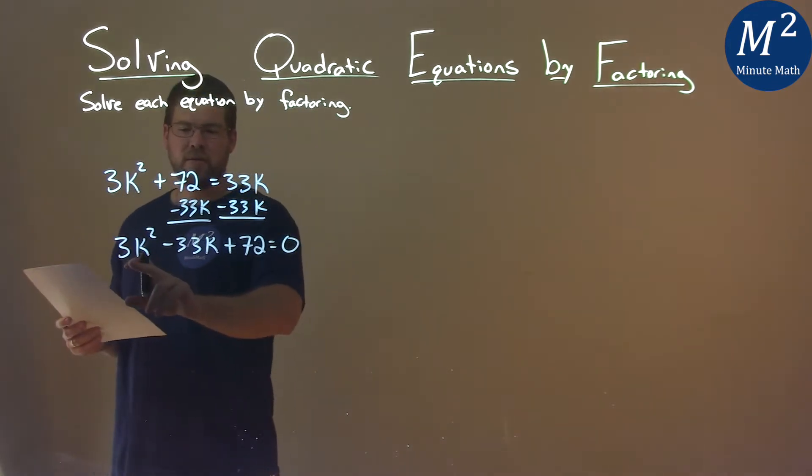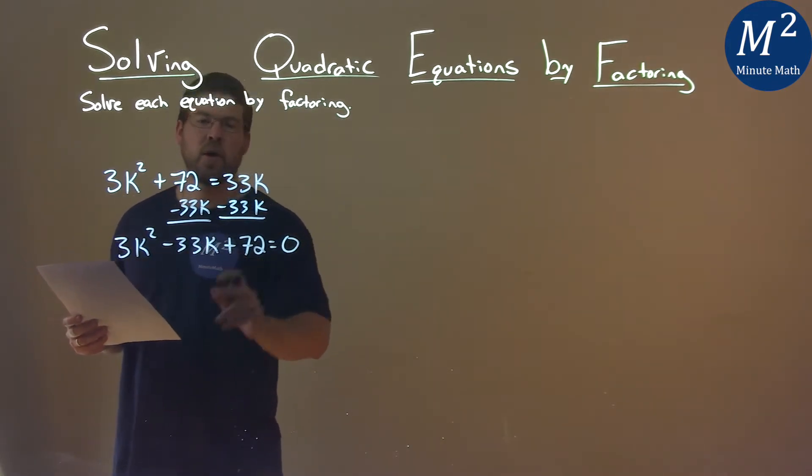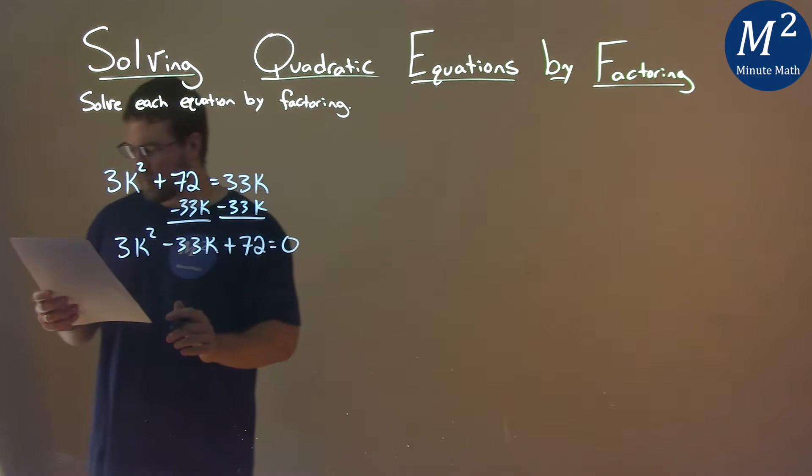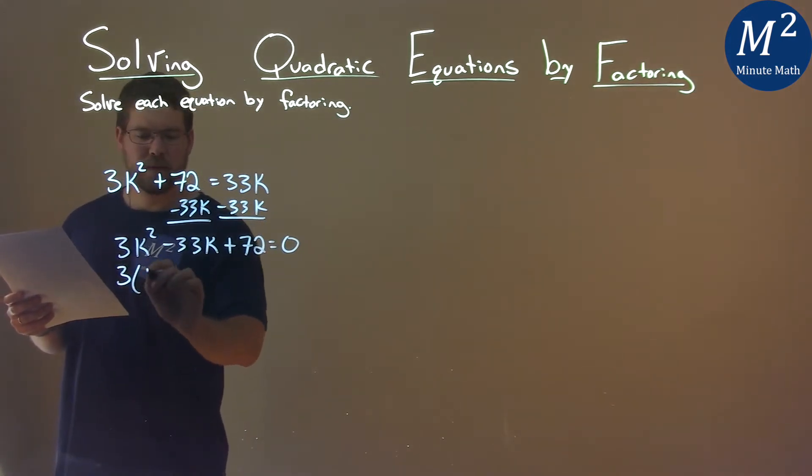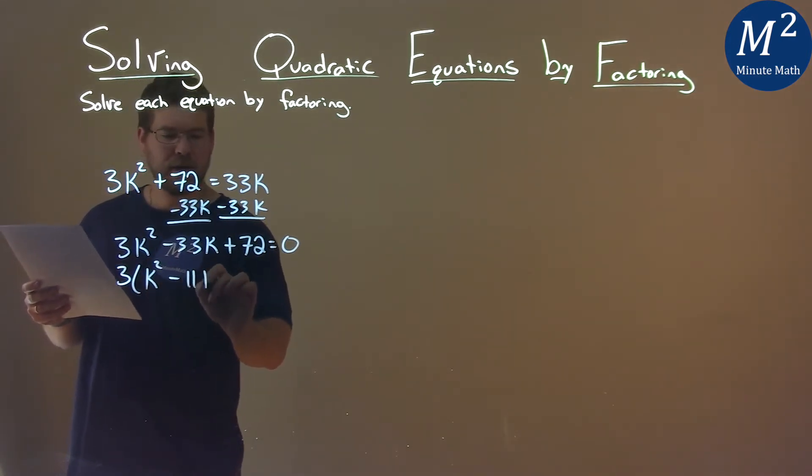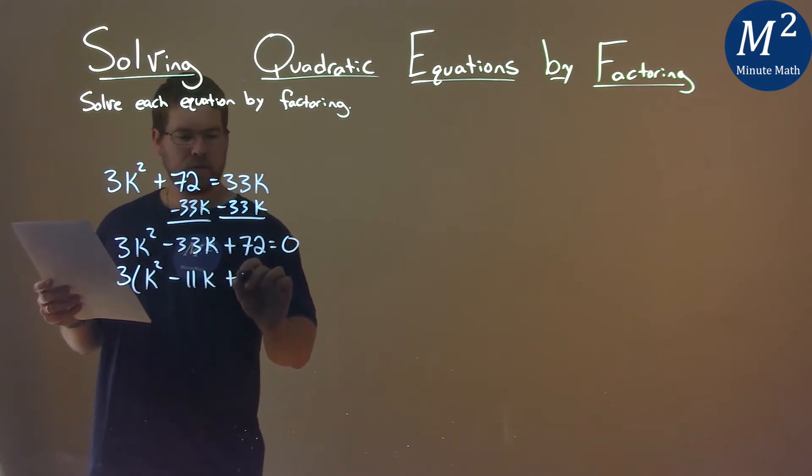So one thing I notice is that there is a three in all three parts here. So if I pull out that three, I'm left with k squared minus 11k plus 24.